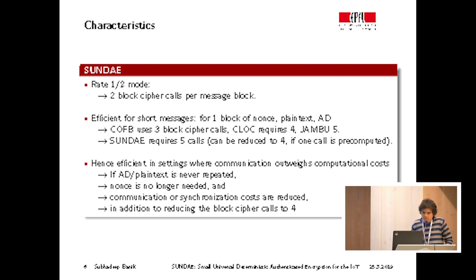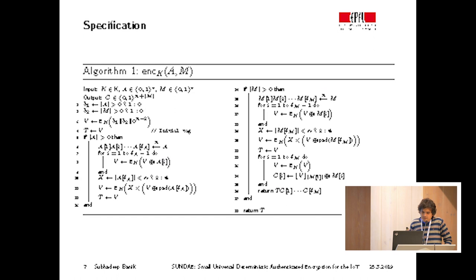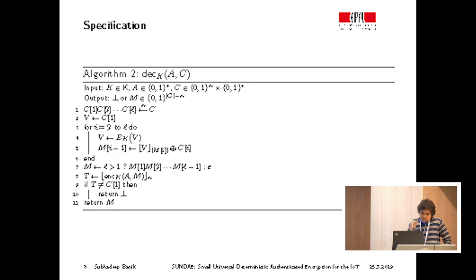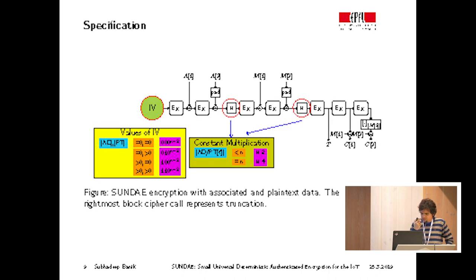So it also has a short state size. If the underlying block cipher has block size N, then Sundae also requires a state size of N, which is an improvement over some recent modes proposed in literature. Our performance is limited fundamentally by the fact that it's a rate-half mode, so it requires two block cipher calls per message block. As such, the ideal use case is for short messages. For example, consider a data set consisting of one block of nonce, AD, and plaintext. Sundae would require five calls to the underlying block cipher, reduced to four if you allow one block cipher call to be pre-computed.